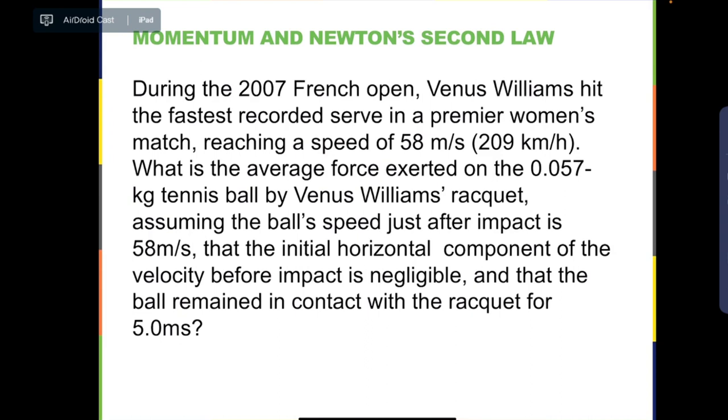Now let us look at an example about the force due to the change in momentum. In this problem, it says, during the 2007 French Open, Venus Williams hit the fastest recorded serve in a premier women's match, reaching a speed of 58 meters per second, or 209 kilometers per hour. Therefore, what is the average force exerted on the 0.057 kilogram tennis ball by Venus Williams' racket, assuming the ball's speed just after impact is 58 meters per second? That the initial horizontal component of the velocity before impact is negligible, and that the ball remained in contact with the racket for 5.0 ms.